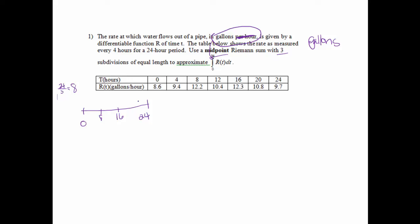All right, so now, since we are going by equal subdivisions, since I'm going by 8s, I can put an 8 on the outside, and then we want a midpoint sum. So between 0 and 8, the midpoint would be 4. So my Y value there would be, or my R value there would be 9.4.